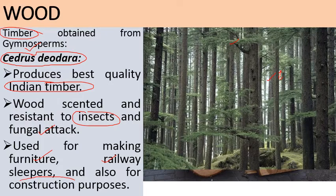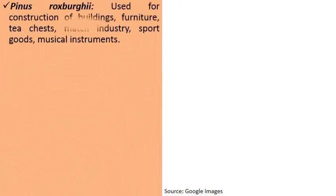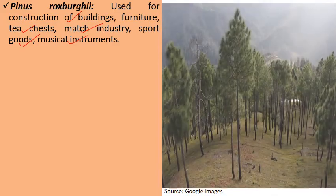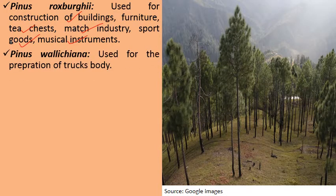Next, we have Pinus roxburgii, whose wood is used for the construction of buildings, making furniture, and making tea chests. It is also used in the match industry, to make sports goods and musical instruments. Then we have Pinus wallichiana, commonly known as Gale or blue pine, which is used for the preparation of truck bodies.